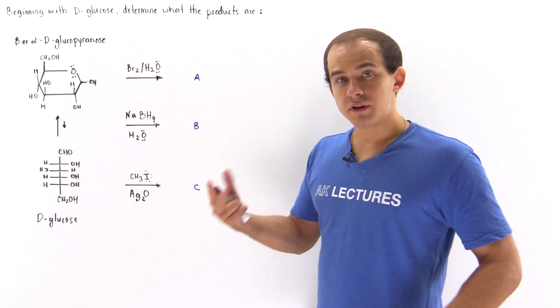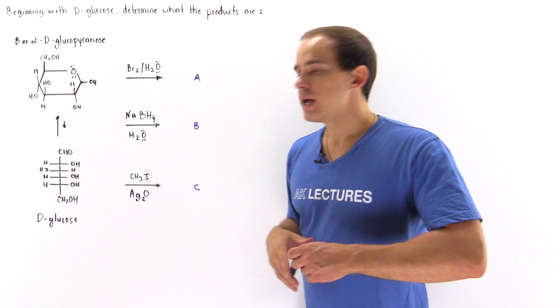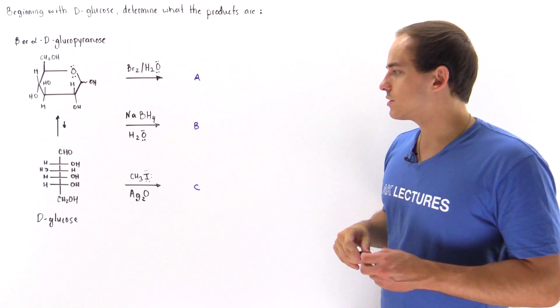Beginning with the open version of D-glucose as shown on the board, let's see what the products are of each one of these reactions.